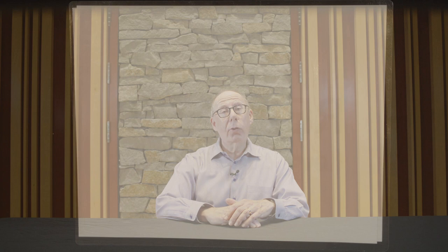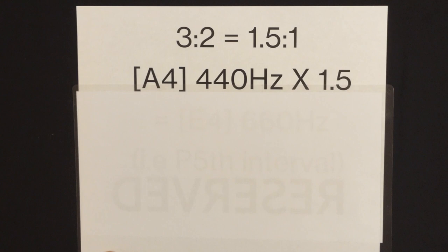Another simple ratio is three to two — that involves multiplying or dividing by three halves, or one and a half. So 440 Hertz would become 660 Hertz, the E above the A. That interval is the beautiful-sounding perfect fifth, and now you know why it's called perfect.